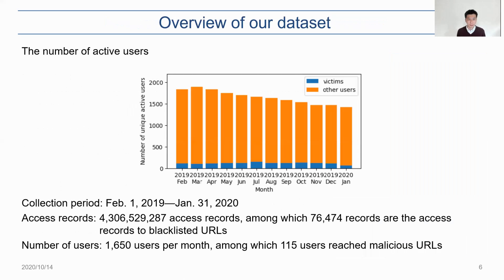This slide shows the overview of our dataset. We collected web access records from February 1st, 2019 till January 31st, 2020. In total, we collected about 4 billion access records, among which 76,000 records are access records to blacklisted URLs. In terms of the number of users, we collected logs of 1,650 users per month, among which 115 users reached malicious URLs. The graph shows the number of active users in each month — an active user being a user who sent at least one web access request.